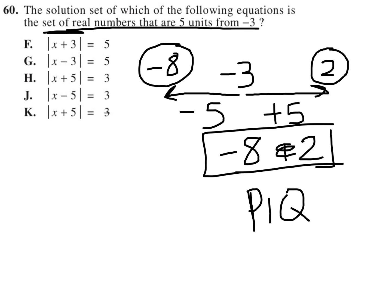So looking at answer choice F, when I plug in negative eight into X, it becomes negative eight plus three, close absolute value equals five. We just want to see if that's a true statement.